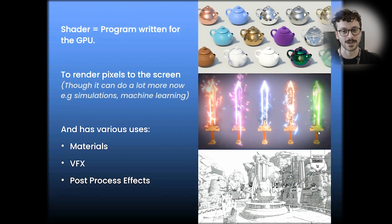that we give the GPU, the graphics processing unit, and most commonly it's used to render pixels onto the screen. Though in recent times it can do a lot more than that, like simulations and machine learning. And we'll talk a little bit about how and why that's possible. And it has a lot of uses. Most commonly it's used for materials and surfaces. It's also used for visual effects, post-process effects. In general, if you see anything on the screen that is 3D graphics or is in some way artful, it has probably been through and contains a shader.